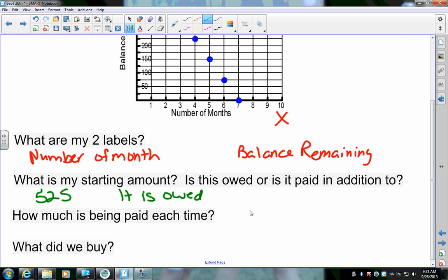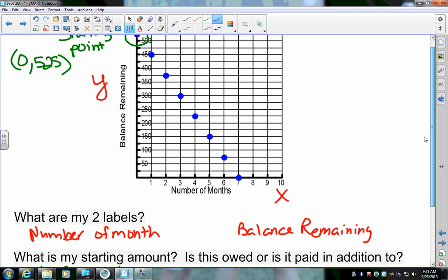So, it says, how much is being paid each time? This right here, this is your coefficient. This is your rate of change. There's a couple ways that you can figure that out. You can go up here and try and figure out on the graph how it's changing. Like, how you're going down and over each time.